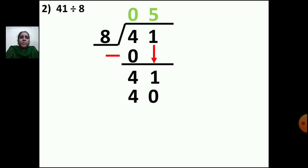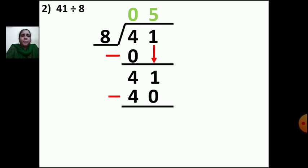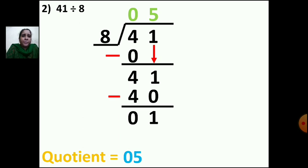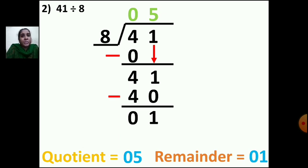Put the minus sign and draw one line. Now subtract: 1 minus 0 is 1, and 4 minus 4 is 0. The quotient is 5 and the remainder is 1. Write the answer: quotient is 5 and remainder is 1. This is how you do the sum step by step.